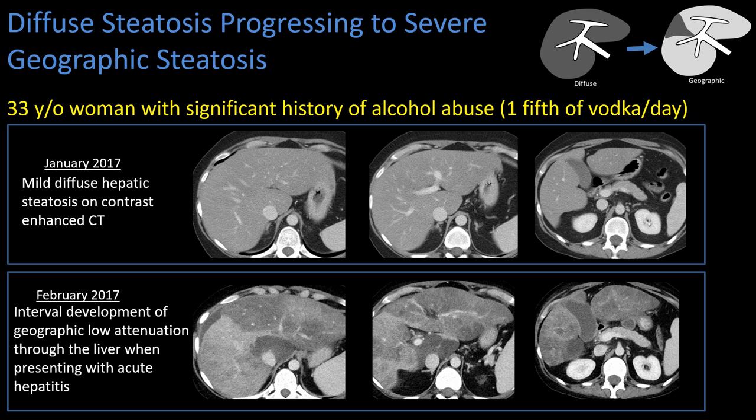Here we have a 33-year-old woman with a history of alcohol abuse who had mild steatosis. We can see some mild steatosis — decreased density of the liver relative to the spleen — and that mild steatosis worsens quite dramatically.